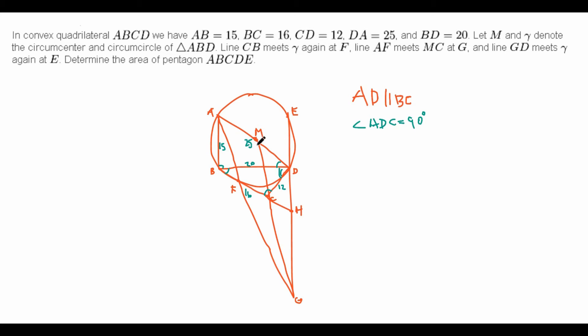So, M is the midpoint of AD, which means that AM is the same thing as MD. Well, what does that mean? Well, since AD is parallel with FH, then that means that, in fact, FC is also the same as CH.